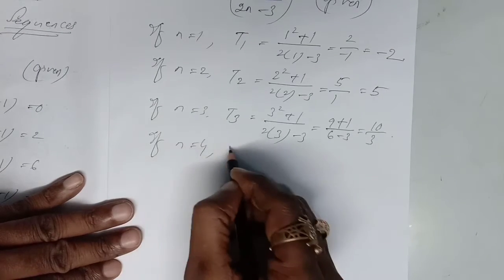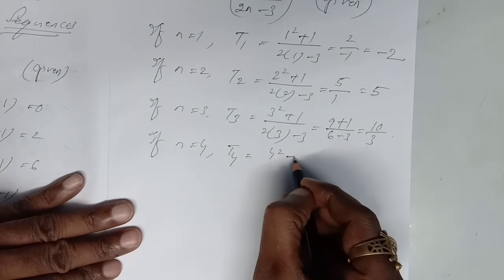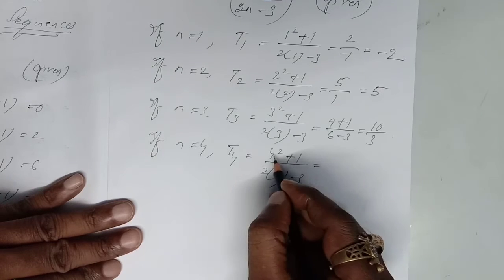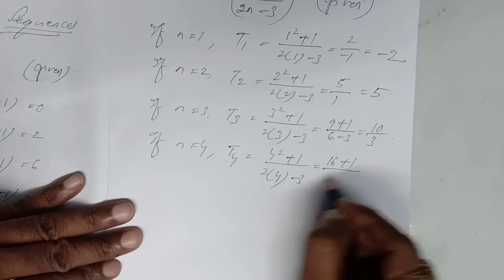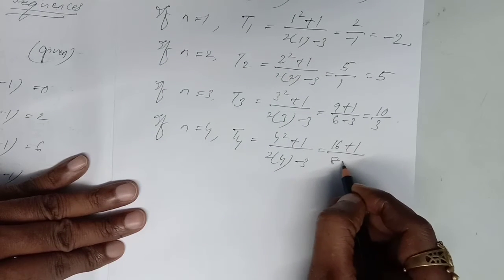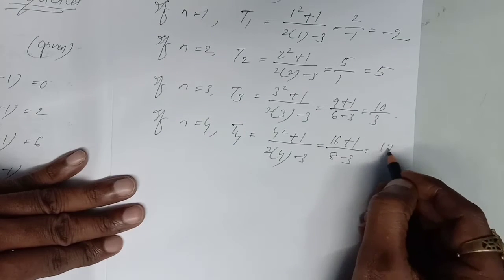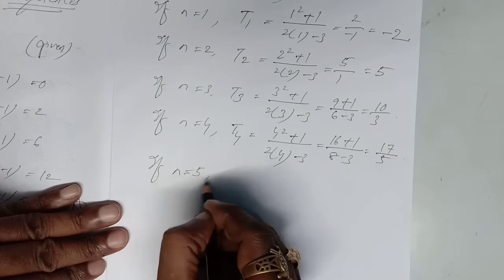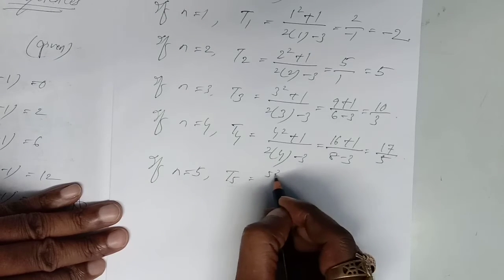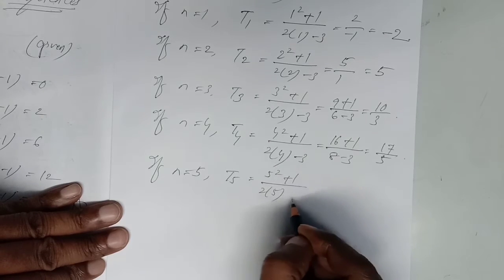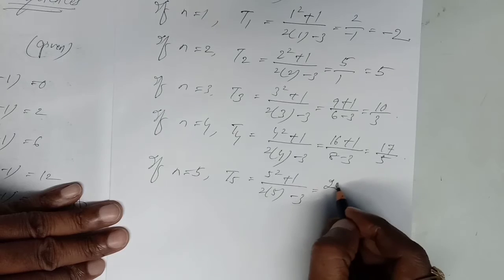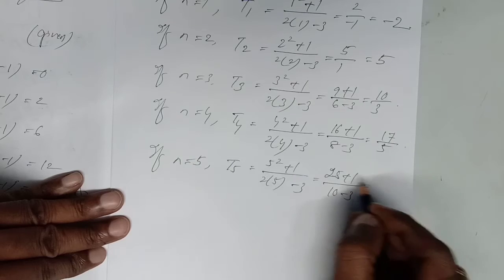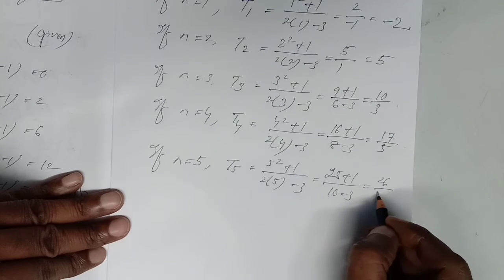Putting n equal to 4, fourth term: (4² + 1) / (2×4 − 3) = (16 + 1) / (8 − 3) = 17 / 5. Next, if n equal to 5, fifth term: (5² + 1) / (2×5 − 3) = (25 + 1) / (10 − 3) = 26 / 7. In this way we are getting 5 terms from the given nth term.